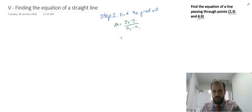Put in your points, so I'll do 9 minus 3 over 4 minus 2. That's going to give you 6 over 2, which is 3. So I now know that the gradient is equal to 3.